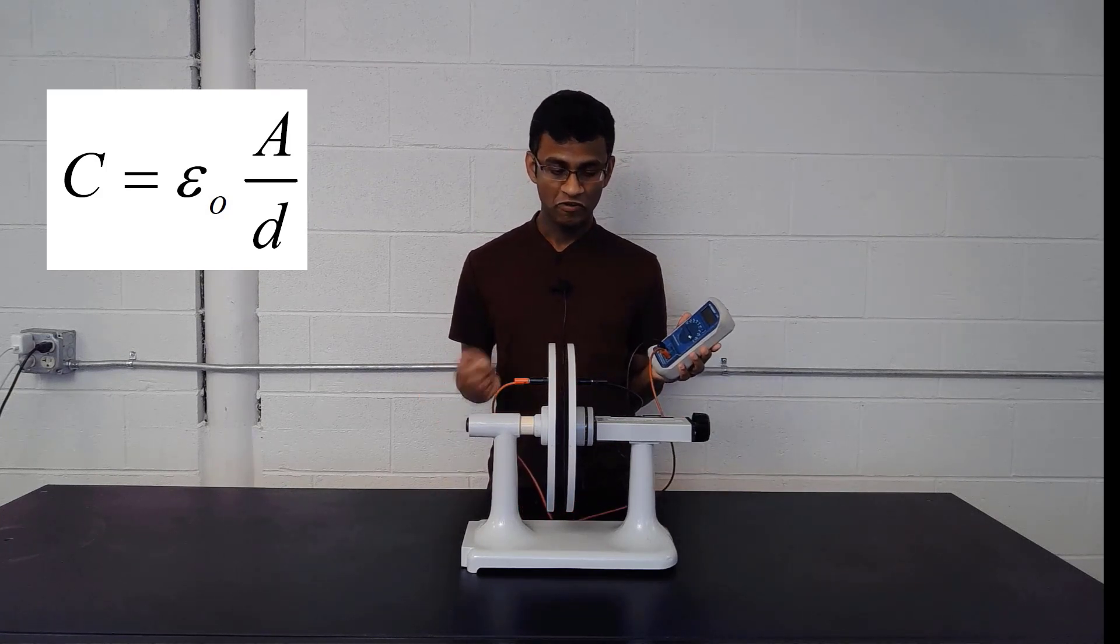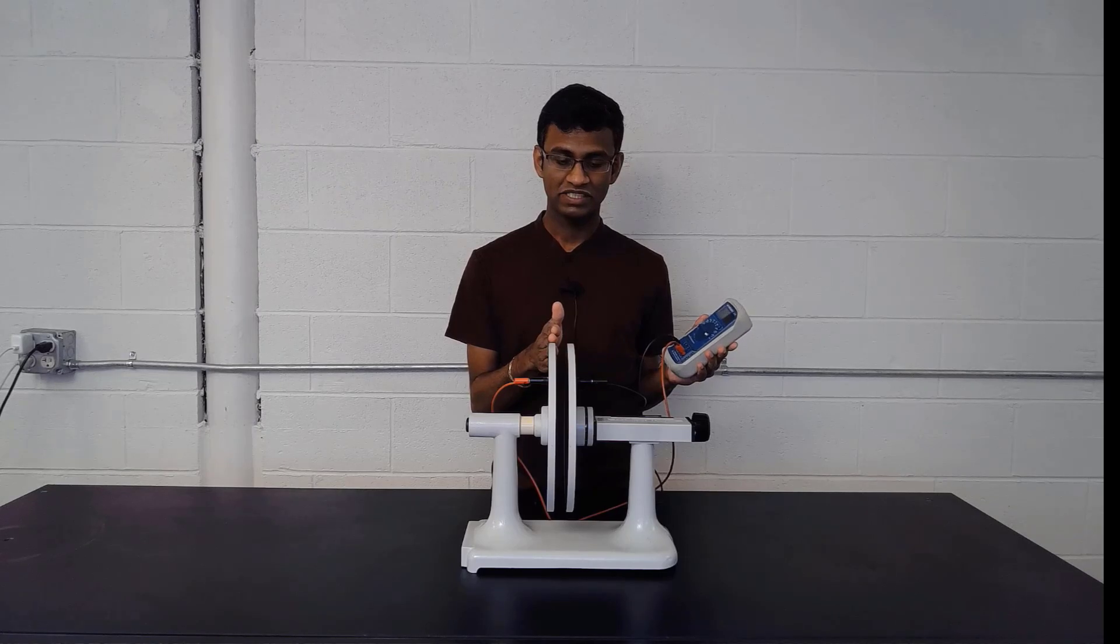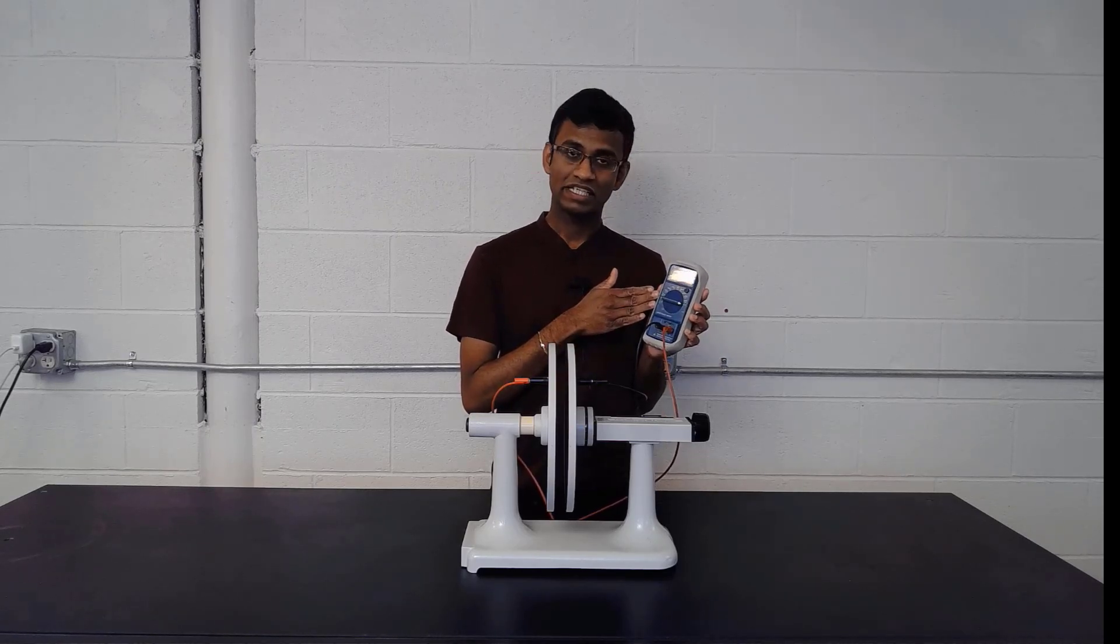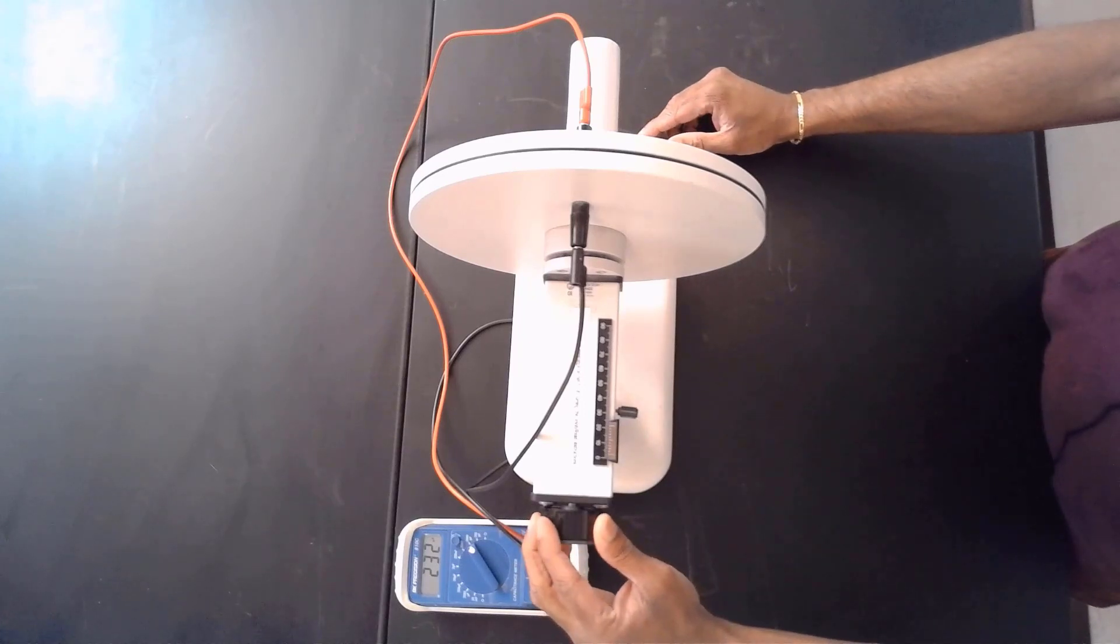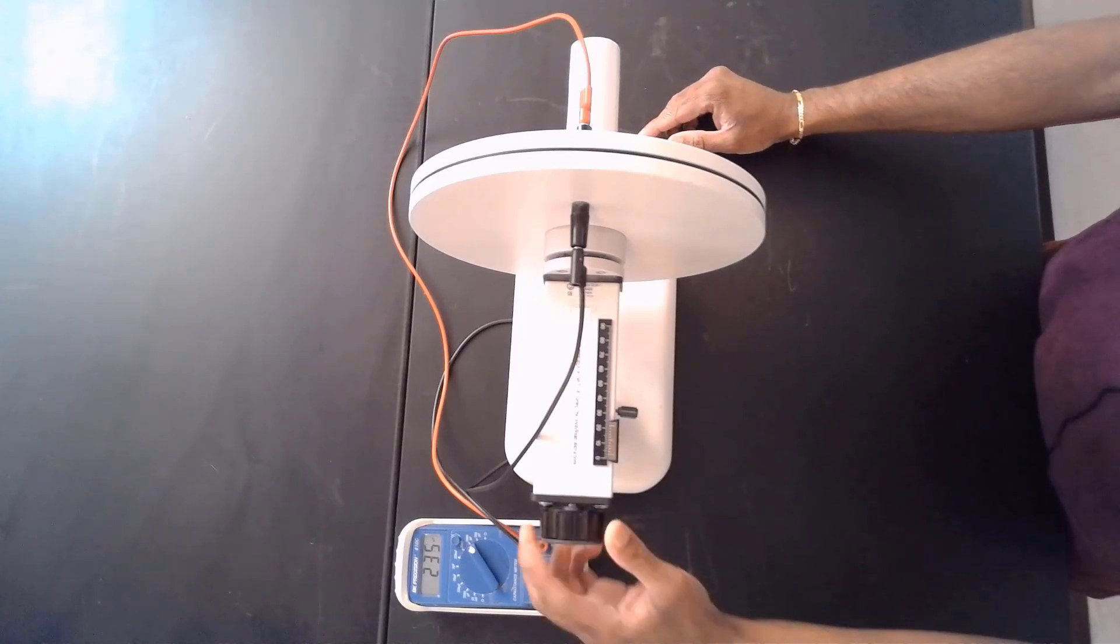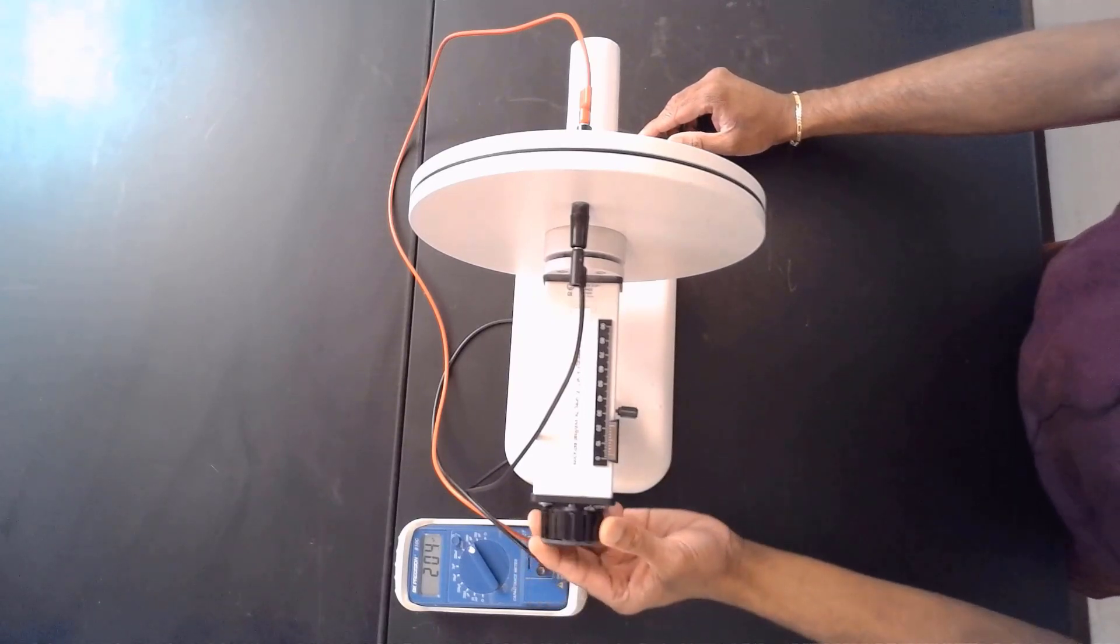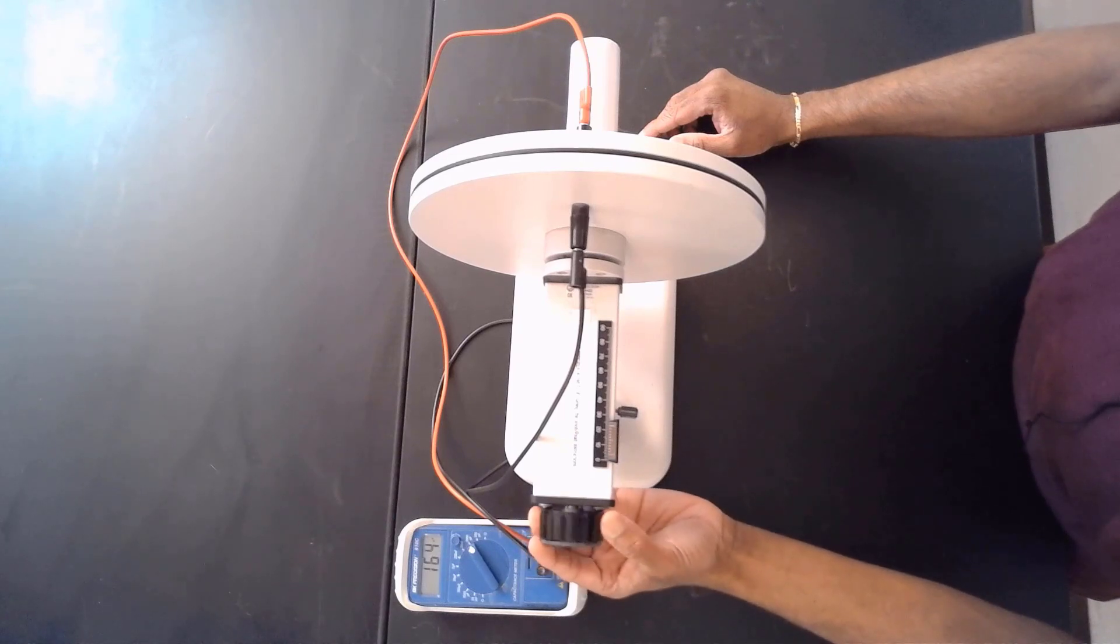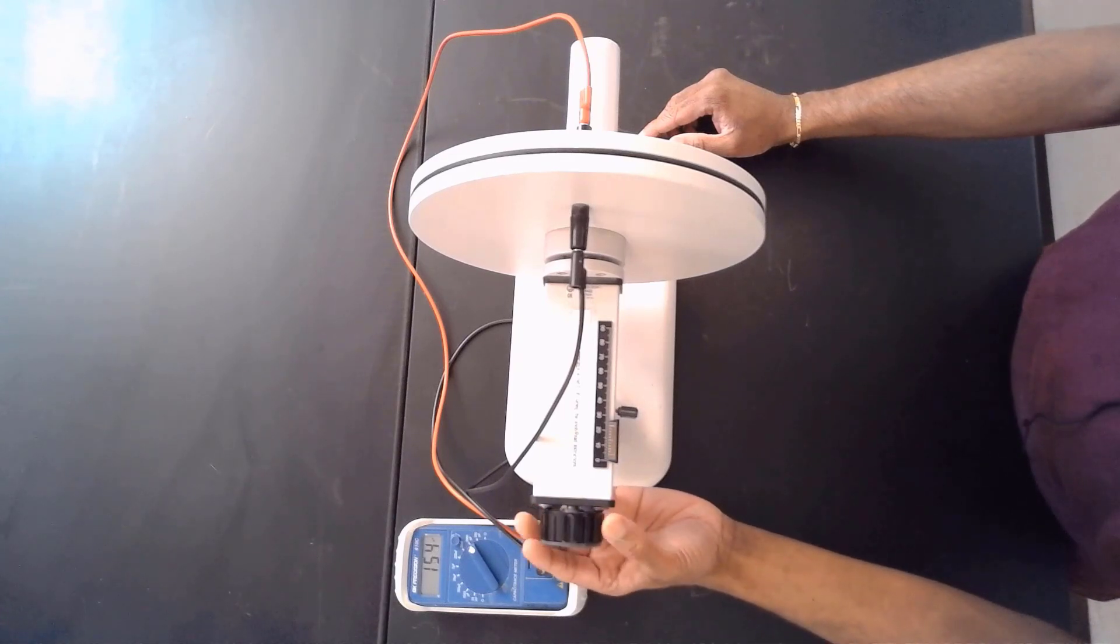So in this experiment, we are changing the distance between two plates while we are recording the capacitance. If I increase the separation between two parallel plates, you will notice the capacitance will be decreasing. Now I am increasing the separation, and the capacitance is decreasing.